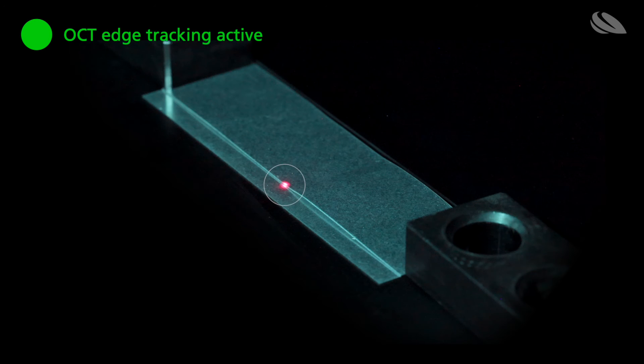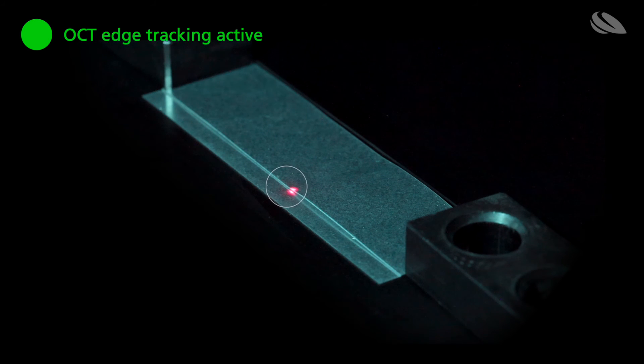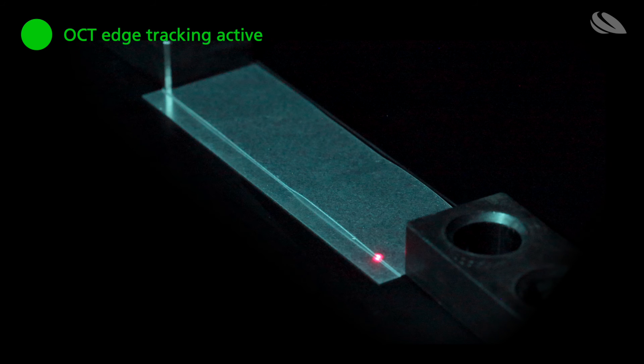To prevent bad welding seams, the OCT system detects gaps and adapts the welding process parameters accordingly. The oscillation amplitude is automatically adjusted to the gap size, allowing for a perfect seam quality.